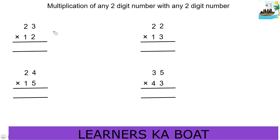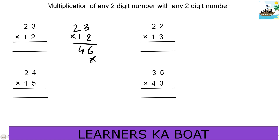First, we will do it in general. 23 into 12: 2×3 is 6, 2×2 is 4, 1×3 is 3, 1×2 is 2. The last addition gives us 276.